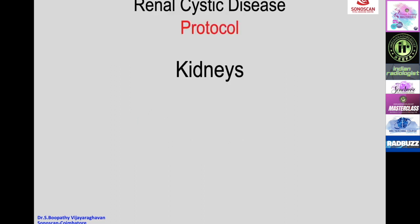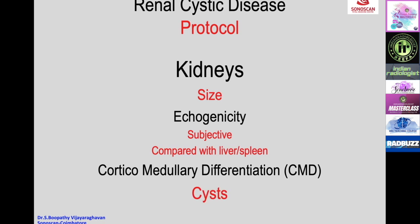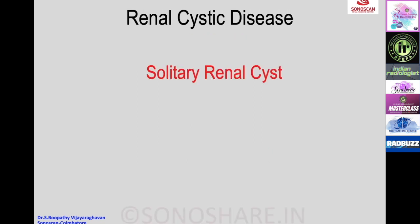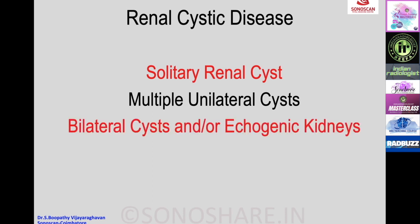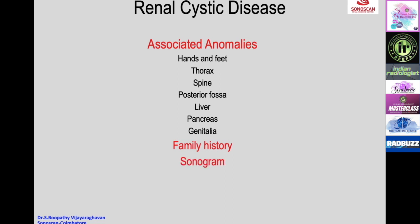The protocol involves scanning the kidneys and measuring their size—whether small, normal, or increased—then assessing echogenicity of the parenchyma subjectively or by comparing with liver and spleen, looking for corticomedullary differentiation and cysts. Cysts can be solitary, multiple unilateral, or bilateral with echogenic kidneys. Associated anomalies should be assessed clinically in the hands, feet, thorax, spine, and posterior fossa, and by ultrasound of the liver, pancreas, and genitalia. Family history and ultrasound of parents and grandparents for kidneys and liver, along with genetic studies, complete the protocol.